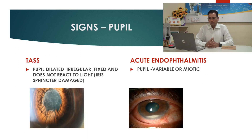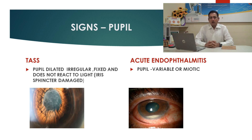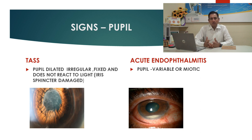The pupil in TASS will be dilated, irregular, and fixed — it will not react to light because of sphincter damage. The pupil in endophthalmitis may be miotic or variable.